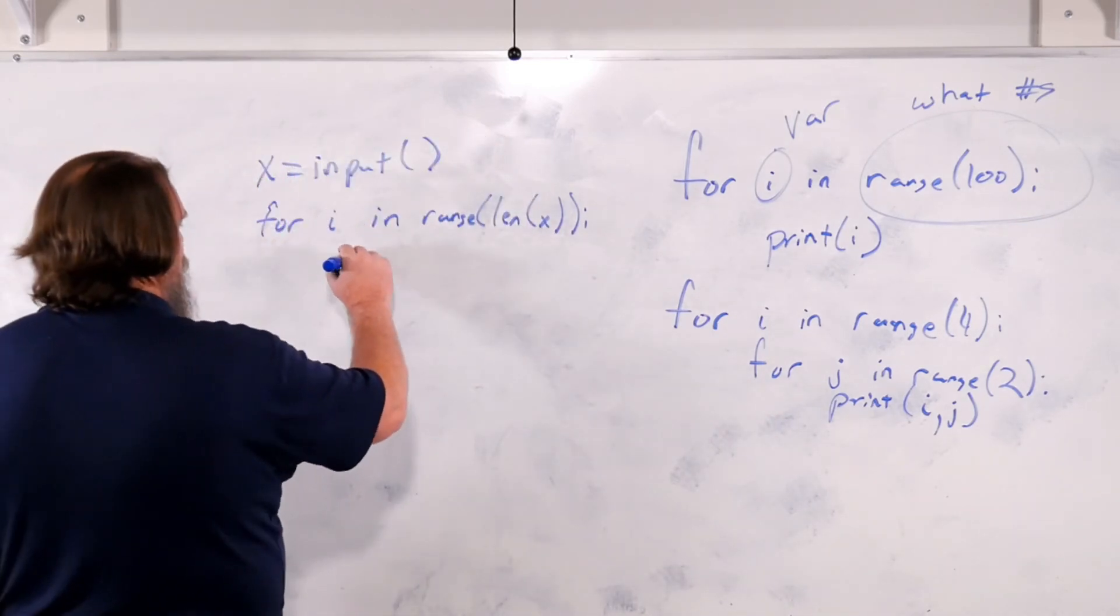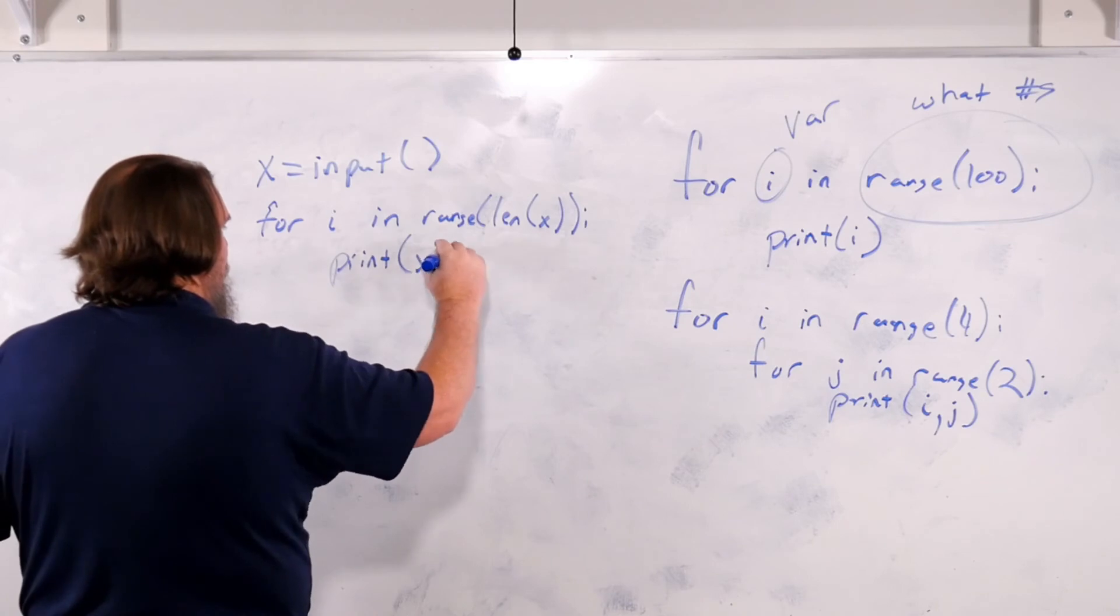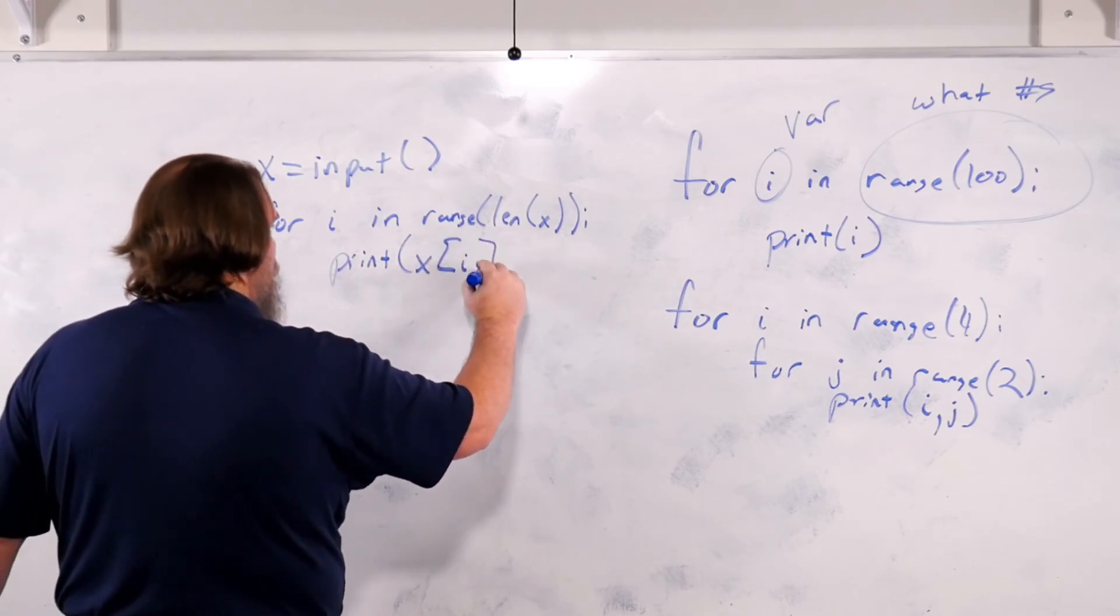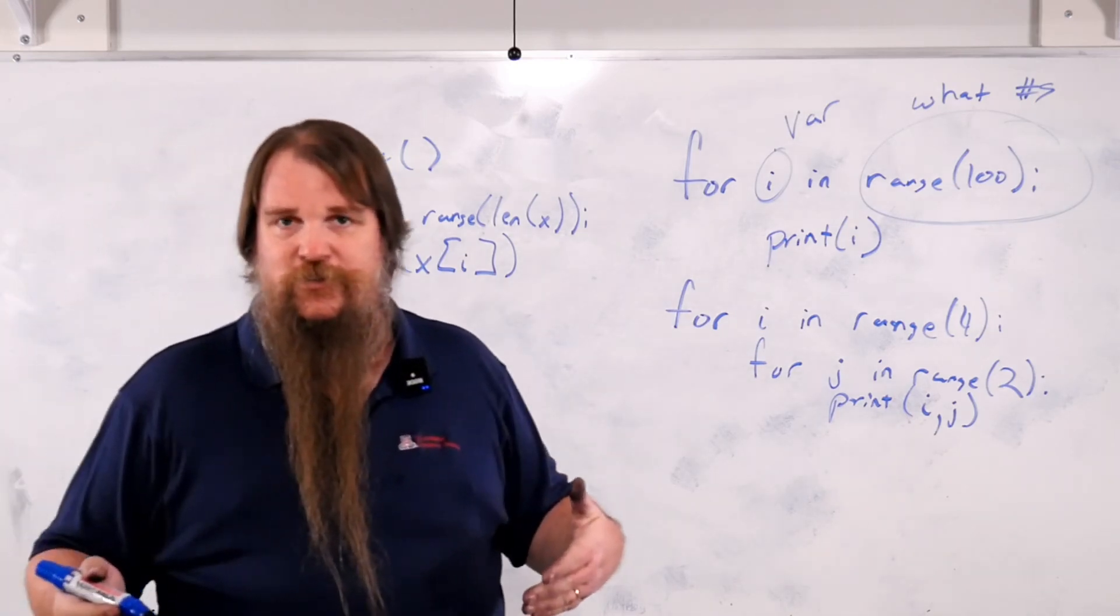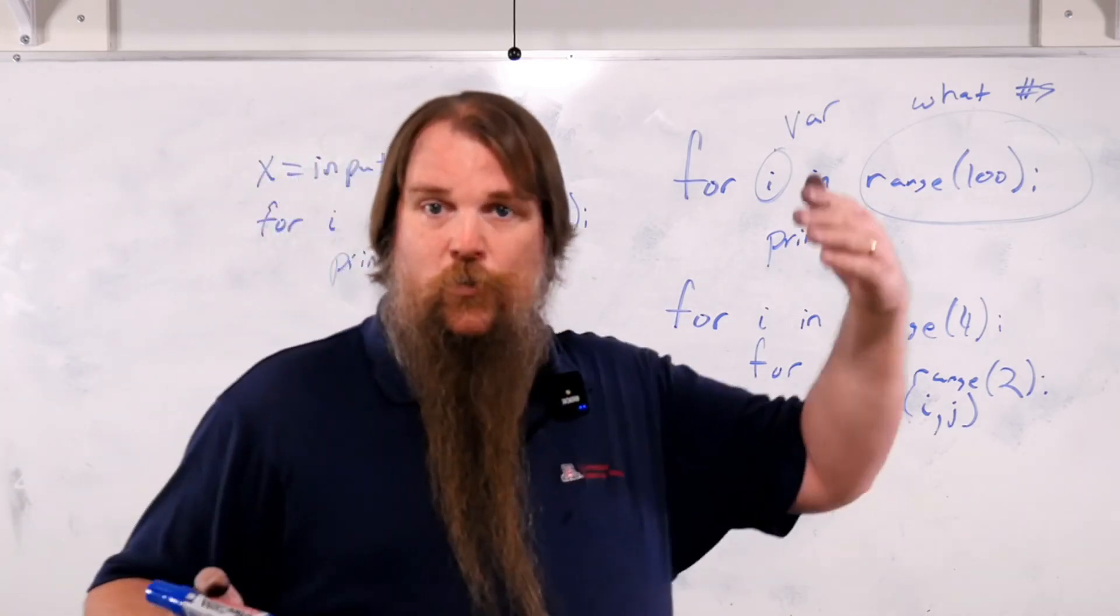If we then do print x sub i, what is this going to do? This is going to print each one of the characters in the string 1 per line.